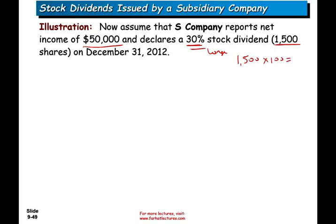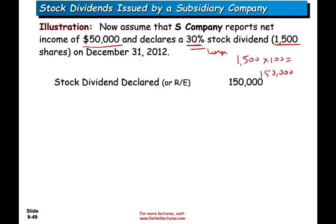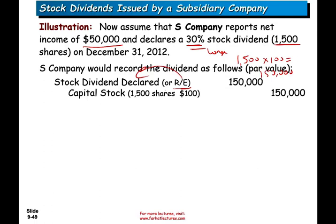Therefore we capitalize 1,500 shares times the par value of $100. We debit retained earnings and credit common stock or capital stock. There's no additional paid-in capital because the shares were issued at par. If it were a small stock dividend there might be additional paid-in capital. This is what S company would record on their books. Notice S company increased their capital stock by $150,000 — they used to have $500,000. And retained earnings went down: the retained earnings used to be $200,000, now it's $50,000.